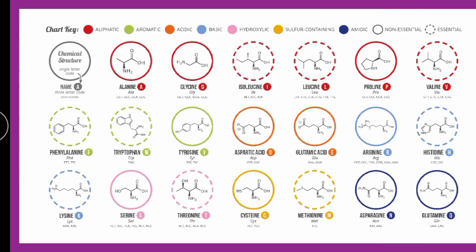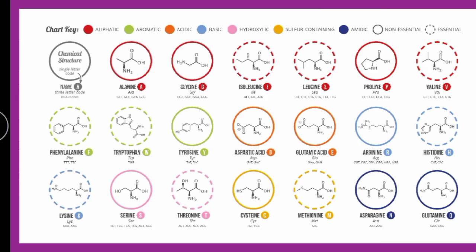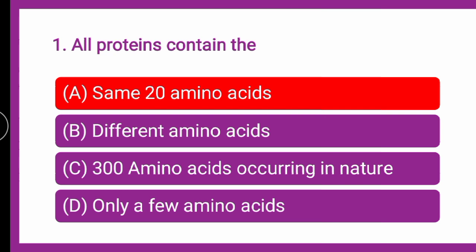The amino acids can be acidic, aliphatic, aromatic, basic, or essential and non-essential in nature. Essential amino acids include isoleucine, leucine, and valine, while non-essentials include phenylalanine, tryptophan, tyrosine, cysteine, valine, and all others. So the correct answer is that all proteins contain the same 20 amino acids.